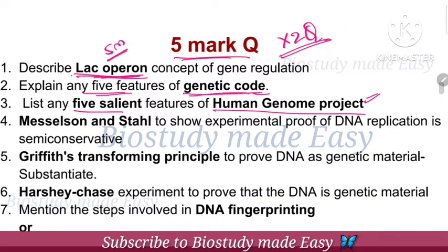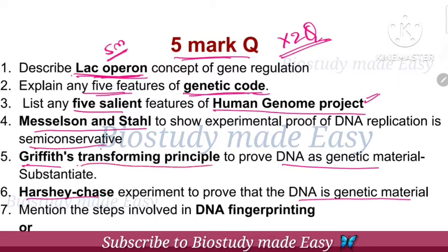Next, 3 experiments — highly important. The Meselson and Stahl experiment for semi-conservative replication, and the Griffith experiment to prove that DNA is the genetic material. The difference is the transforming principle. These three experiments are very important and easy. I will upload these three experiments in the channel, linked in the description box.